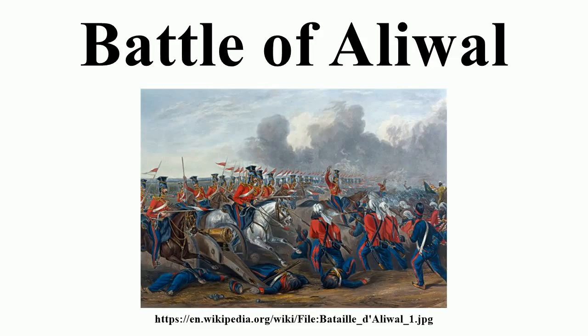A detachment under Ranjod Singh Majithia, with 7,000 men and 20 guns, crossed higher up the Sutlej to besiege the British-held fortress of Ludhiana and menace Hardinge's supply lines. The British commanders detached a division under Sir Harry Smith to clear this threat to their rear.